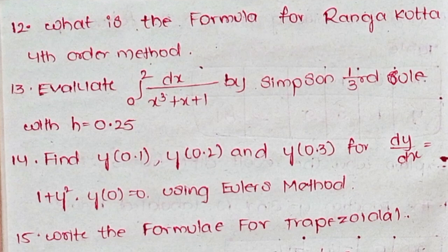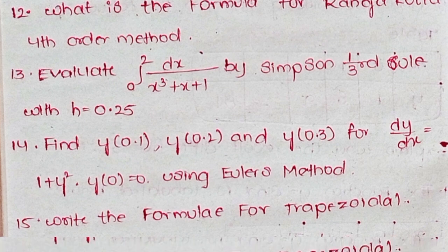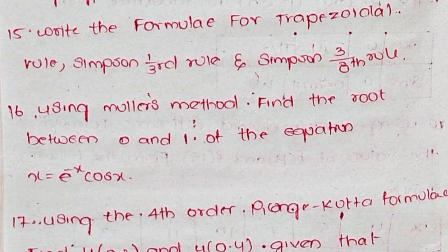Question 12: What is the formula for Ranga-Kutta fourth order method? Question 13: Evaluate ∫₀² dx/(x³+x+1) by Simpson 1/3 rule with h = 0.25. Question 14: Find y(0.1), y(0.2), and y(0.3) for dy/dx = 1 + y² where y(0) = 0 when x = 0. Question 15: Write the formula for Trapezoidal rule, Simpson 1/3 rule, and Simpson 3/8 rule.